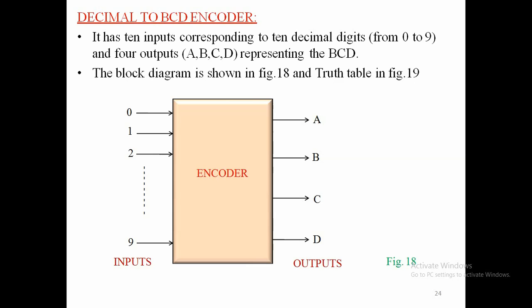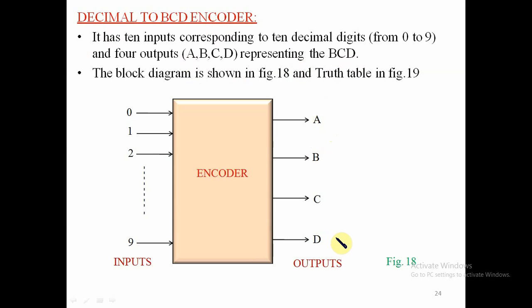Now, the decimal to BCD encoder. The main characteristic is that it has 10 inputs from 0 to 9, corresponding to the 10 decimal digits, and it has 4 outputs — A, B, C, D — representing the BCD output. We prepare a truth table for inputs 0 to 9 and the outputs will be represented in BCD.